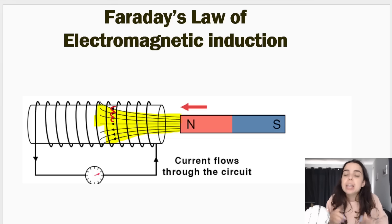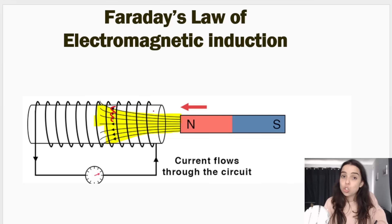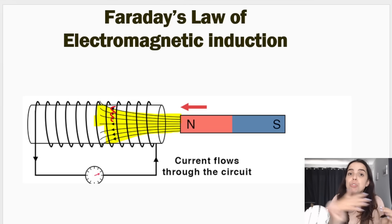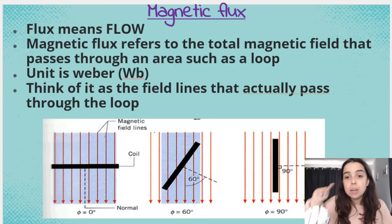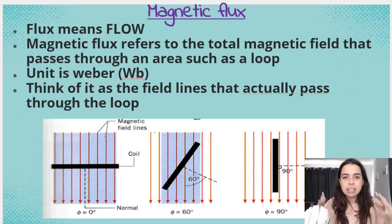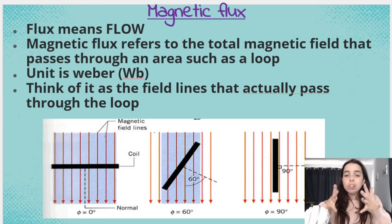Now, how electromagnetic induction works is I need to move either the magnet or the coil — there needs to be relative motion. In the diagram you can see I am moving the magnet into and out of the coil. The conducting wire, which in this case is a solenoid, has coils looped around and around, and you can see that the magnetic field lines are passing through the coil. The word flux means flow, so magnetic flux refers to the total magnetic field — think of the field lines that flow through an area such as a loop.